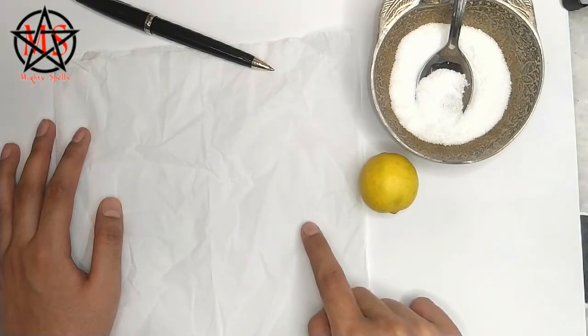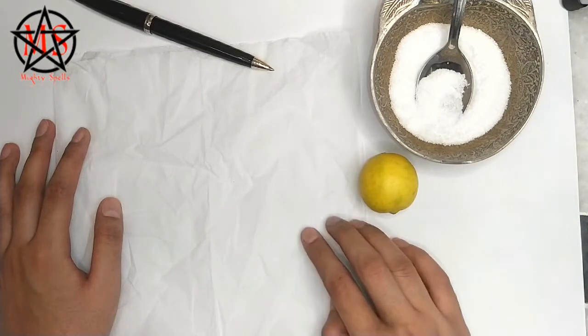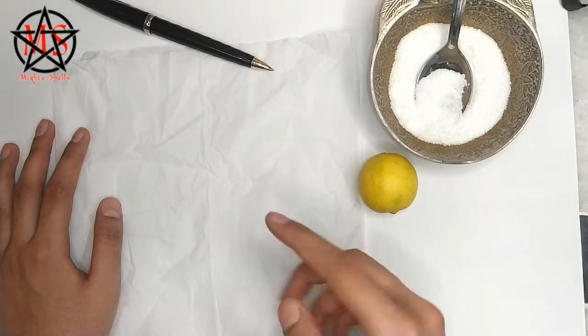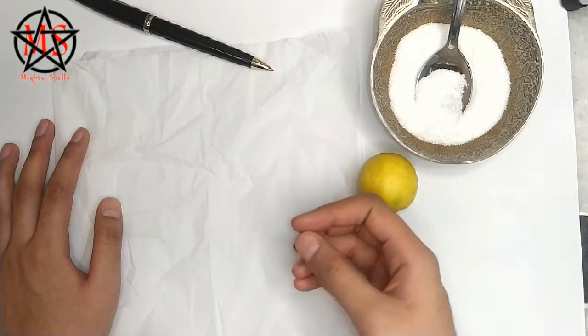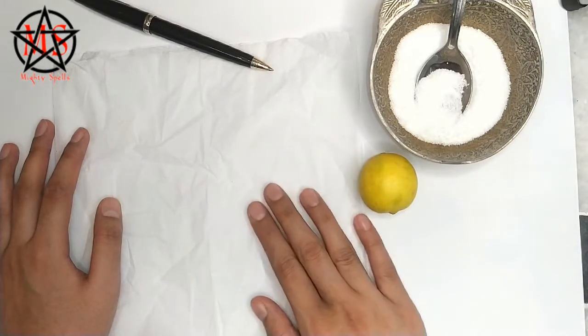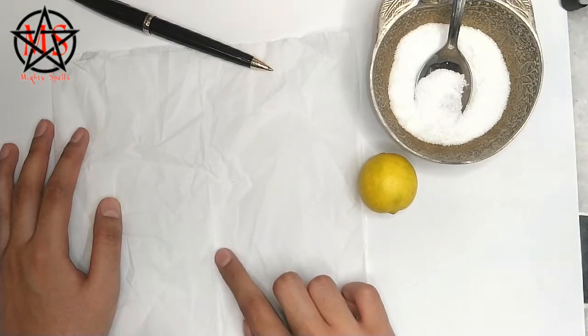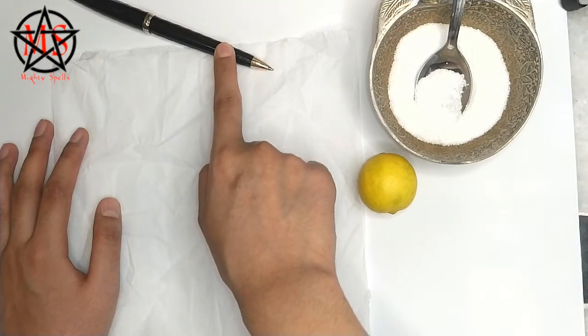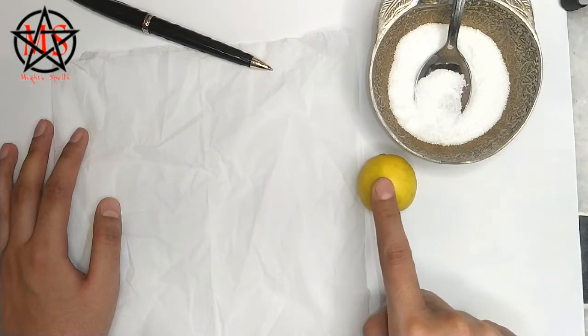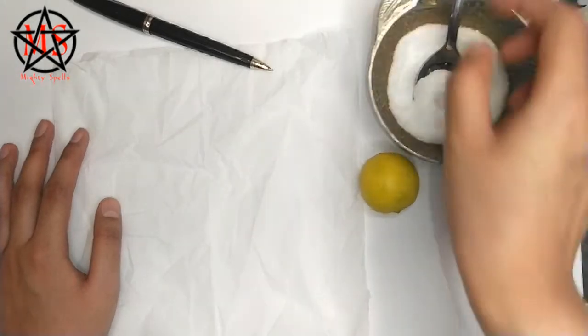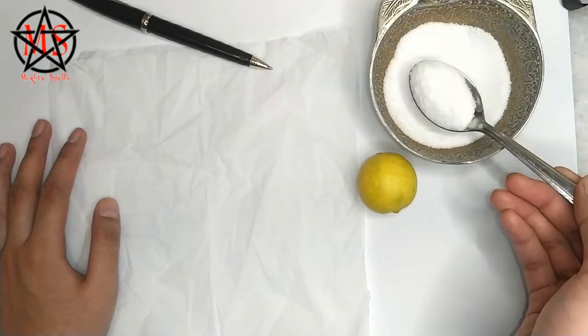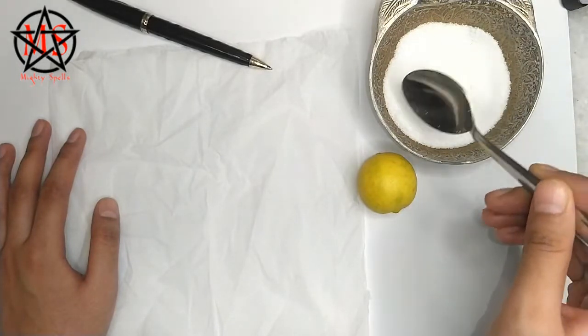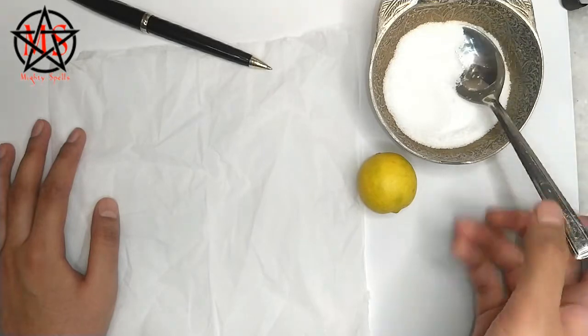You have to do this spell if you want to control someone's mind. This is a mind controlling spell and works perfectly on anyone. You just require a piece of sheet, a pen, a lemon, and a few tablespoons of salt. Only with these items you are going to do this spell.